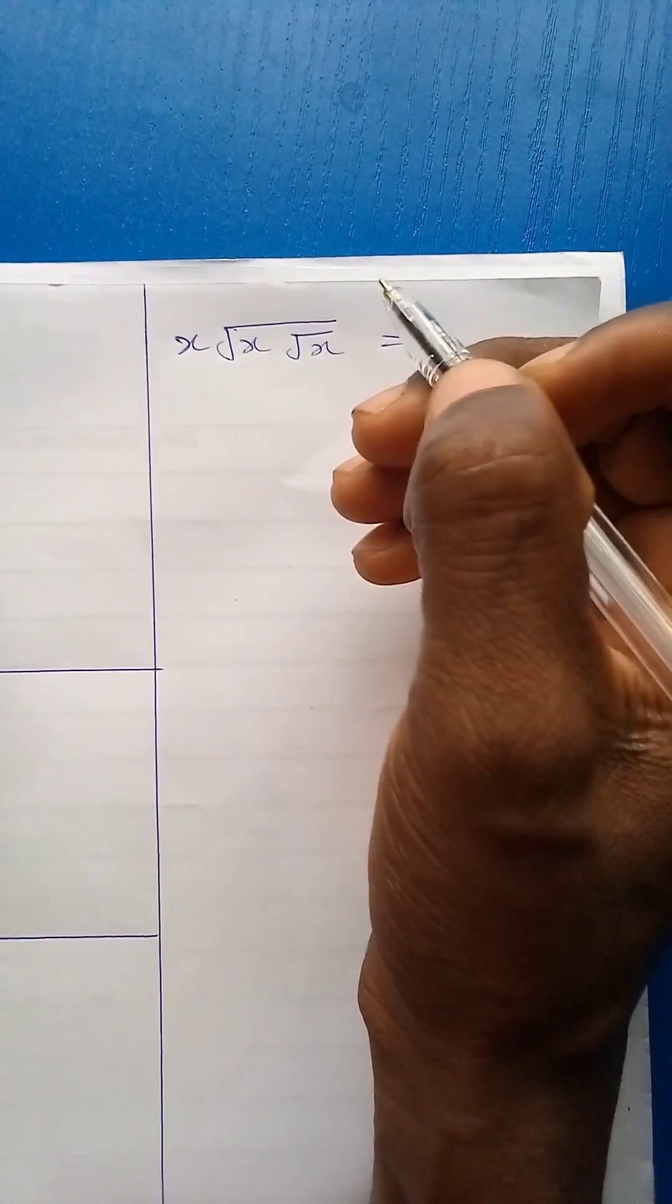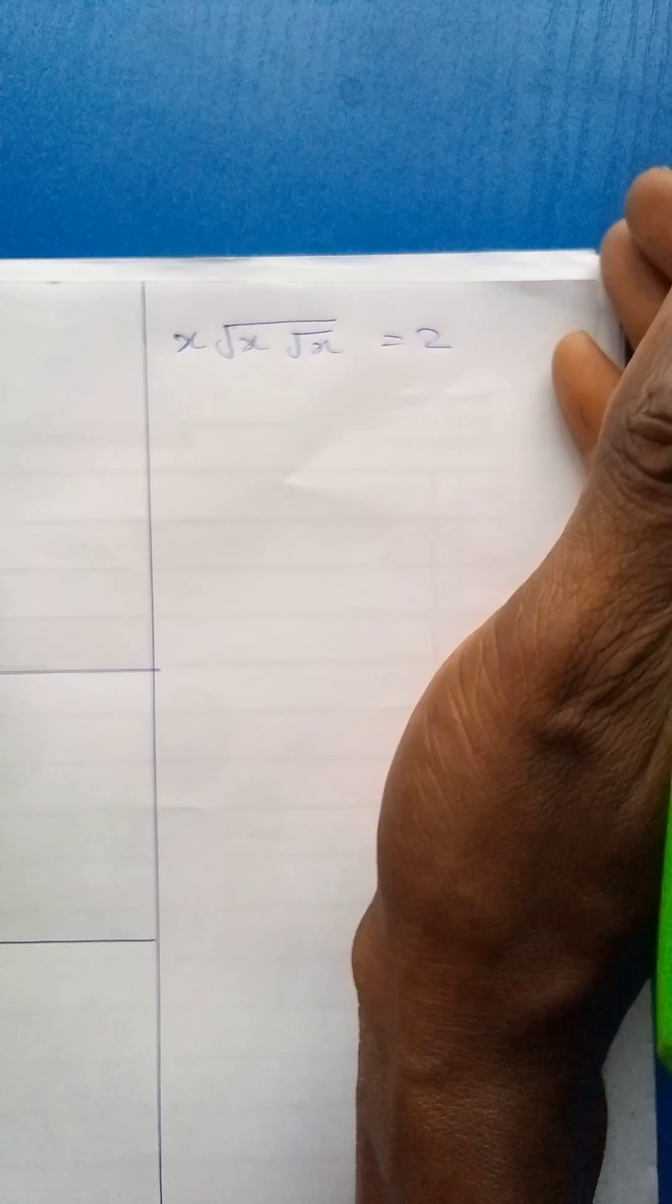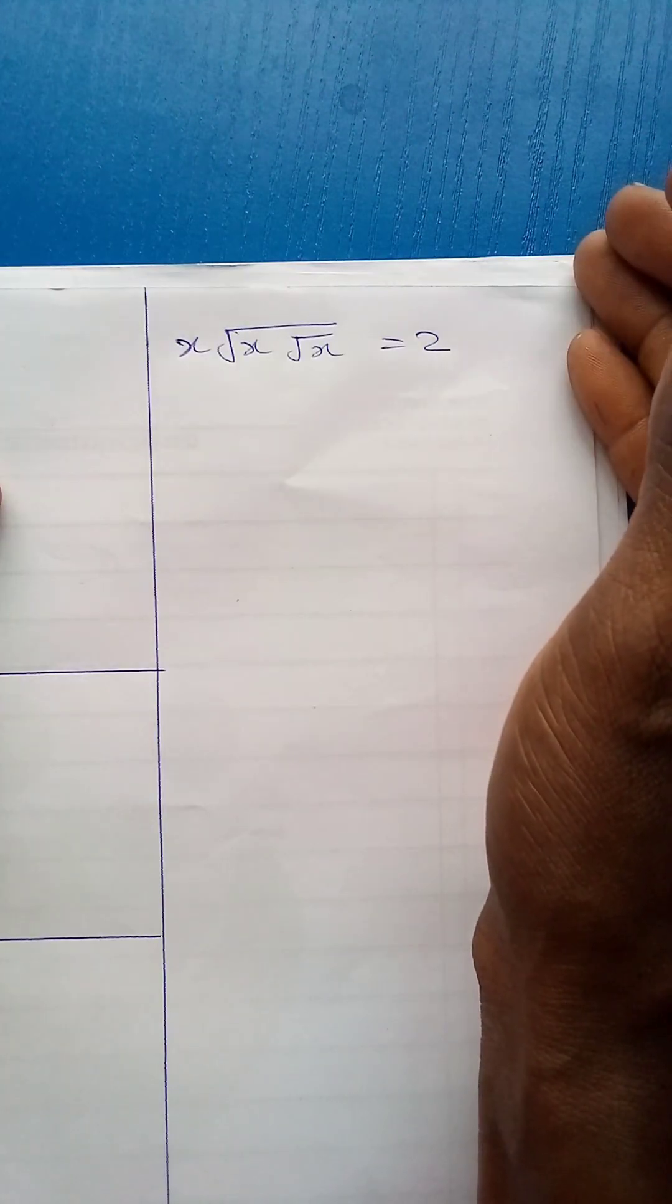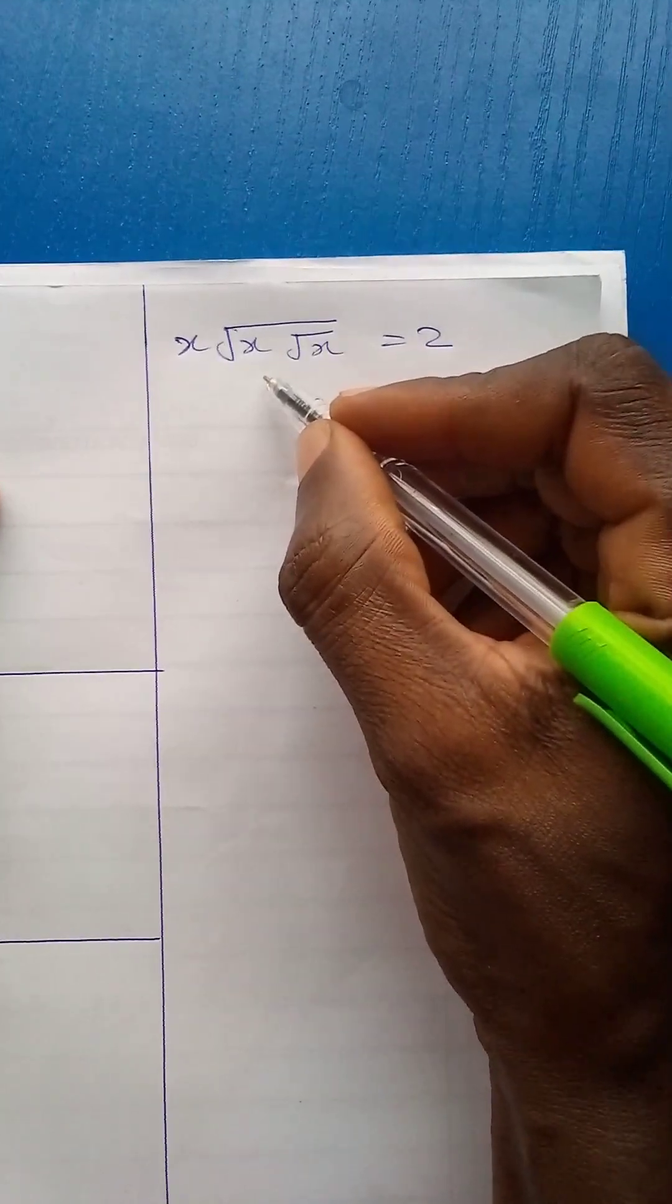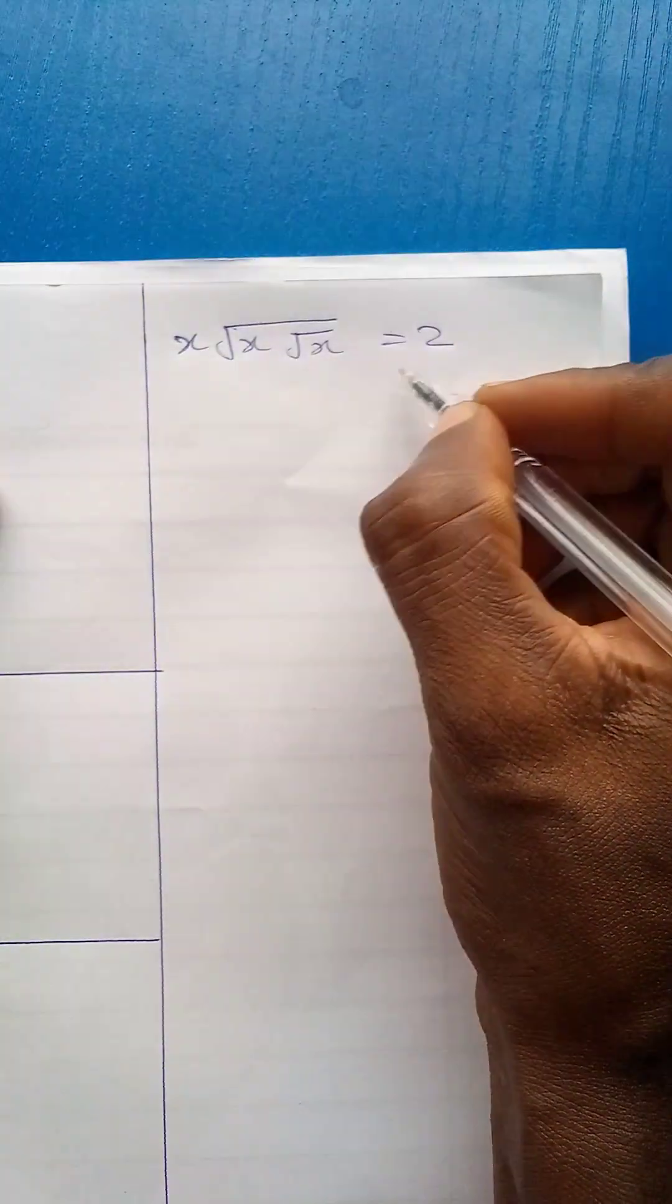Hello everyone and welcome to another video in my channel. In this video, we are required to find the value of x given that x times square root x times square root x is equal to 2.